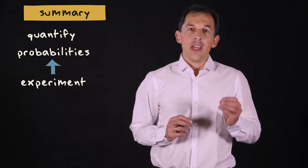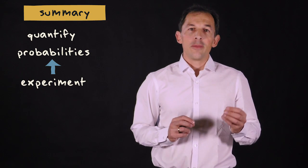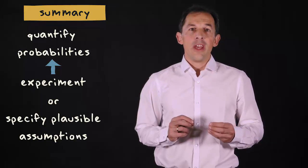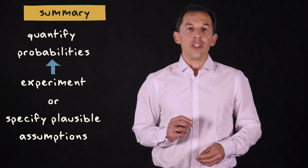To quantify the probabilities for each event in a tree diagram, you can conduct experiments. In the absence of these, you can sometimes specify plausible assumptions about outcomes in the sample space, and estimate the probabilities based on reasoning.